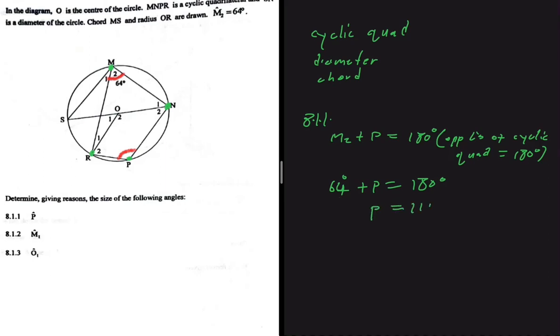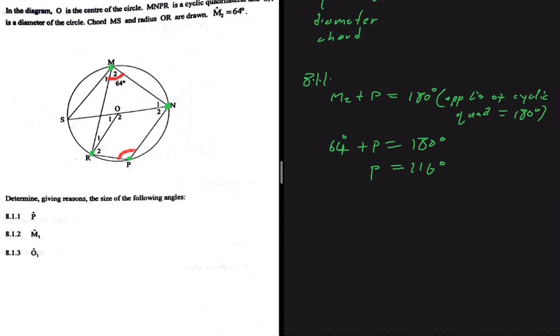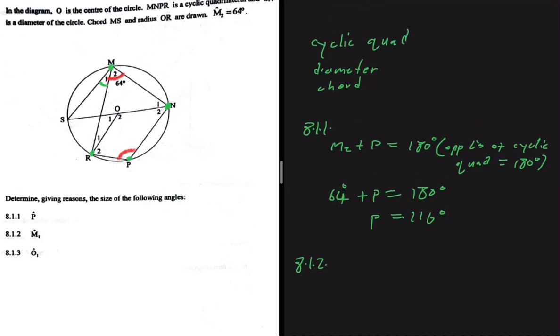And then 8.1.2 saying that let's determine the size of M1. So M1 is this angle here. So let's go to our keywords. We have used a cyclic quad already, and M1 has nothing to do with the cyclic quad.